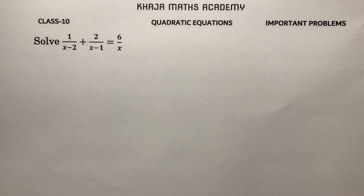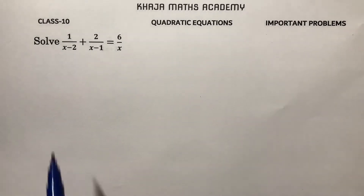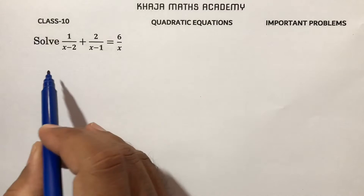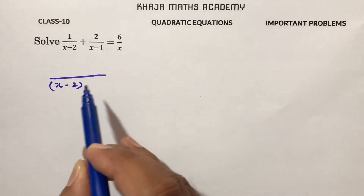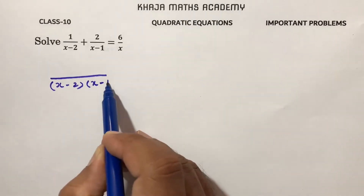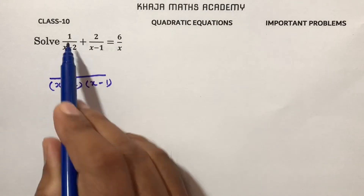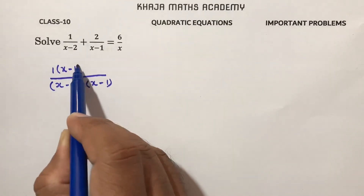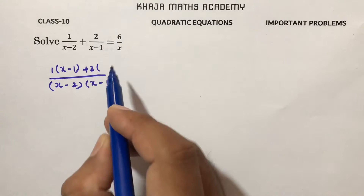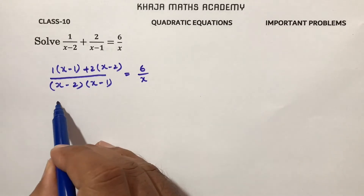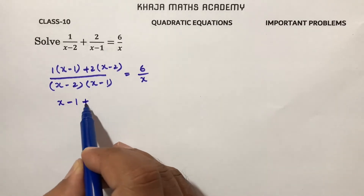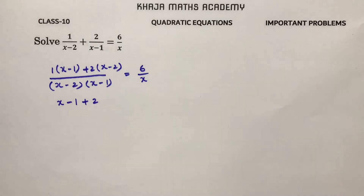Solving an important problem: 1 by (x minus 2) plus 2 by (x minus 1) equals 6 by x. In two steps, let's take the LCM which is (x minus 2) into (x minus 1). So we get 1 into (x minus 1) plus 2 into (x minus 2) equals 6 by x. Expanding: x minus 1 plus 2x minus 4.